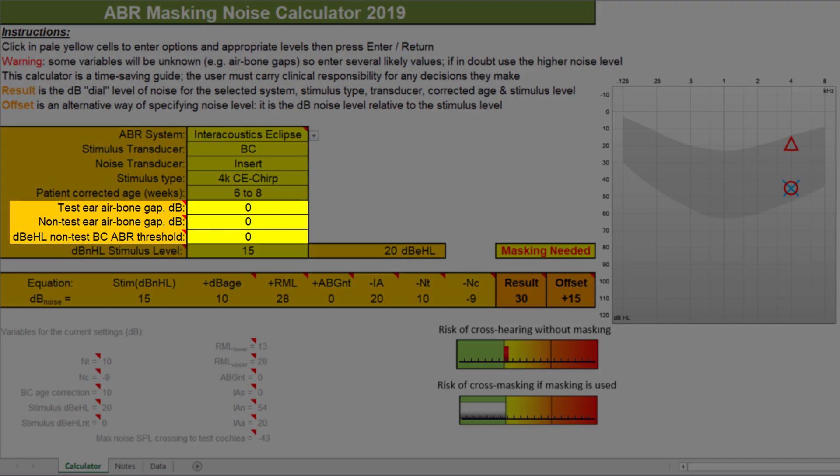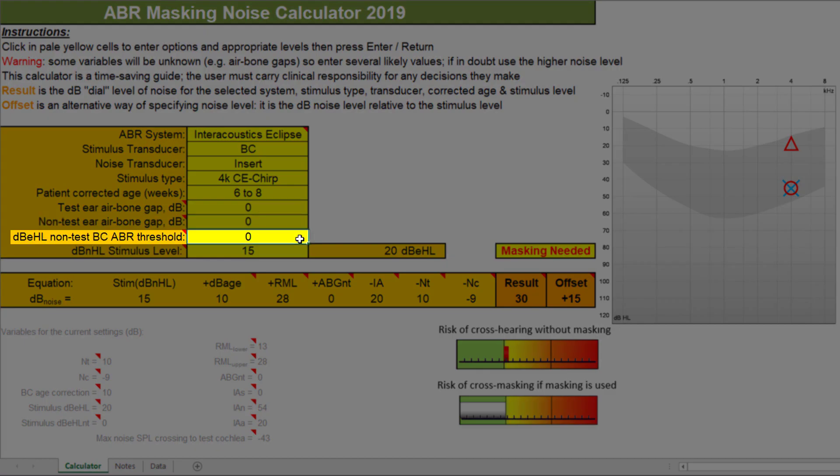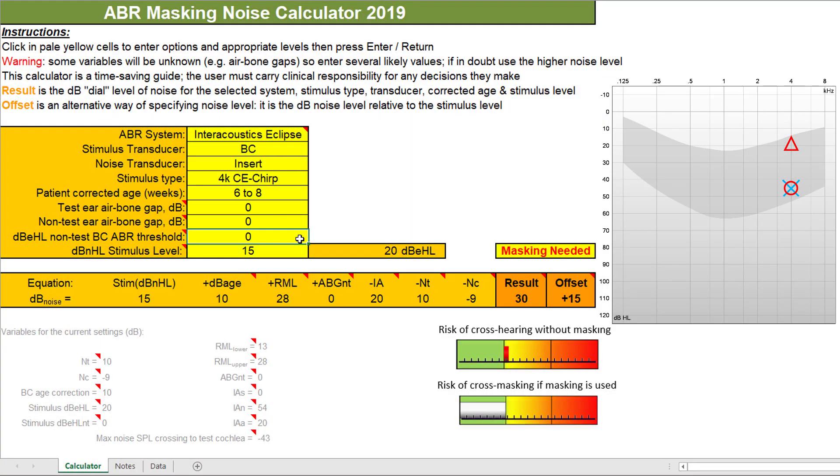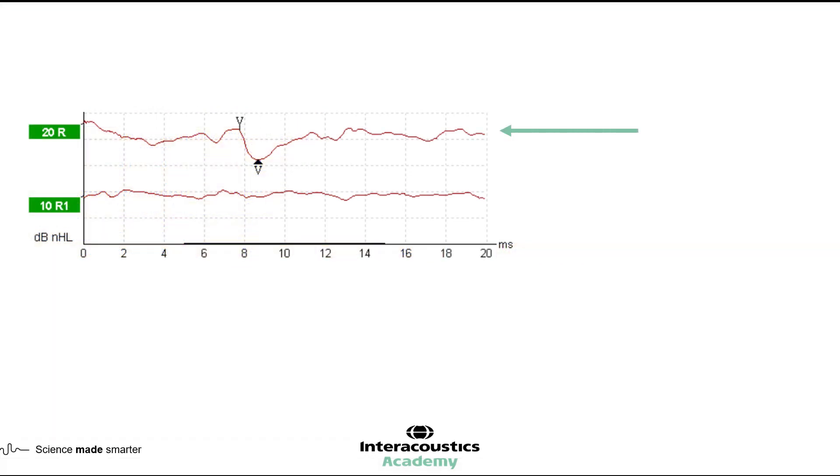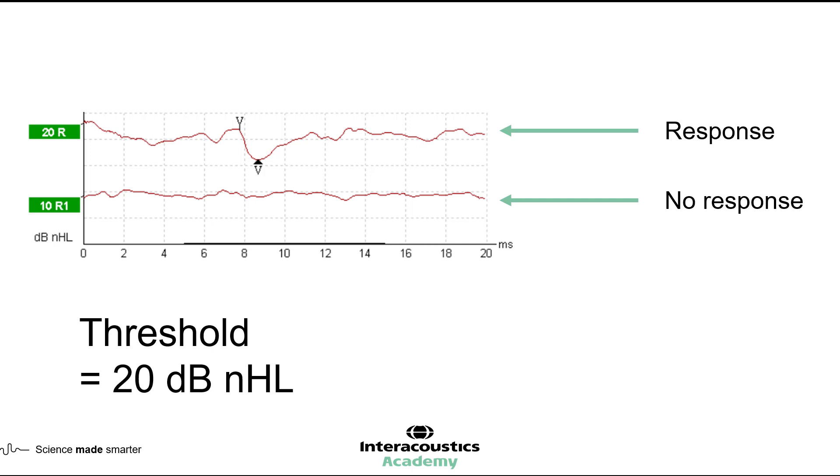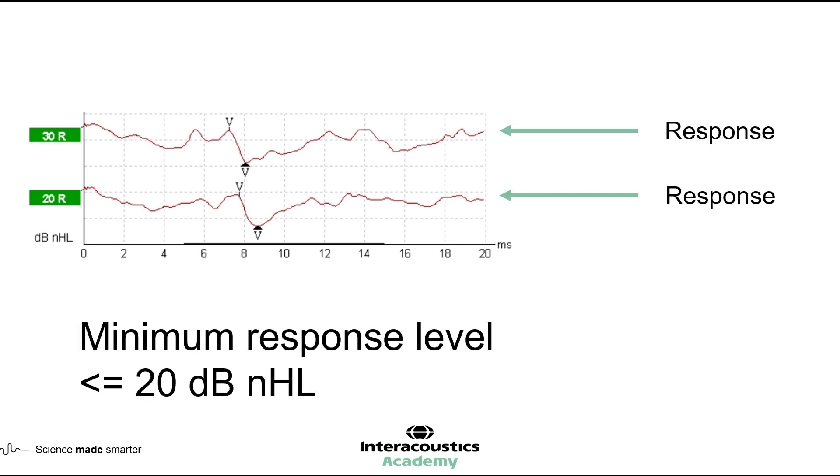Now, there are three remaining boxes to complete in the calculator. The test year air bone gap only applies for air conduction masking, so we can leave this as zero for this example. The non-test ear air bone gap and the non-test BC ABR threshold are both unknown values at this moment. You can make use of your not masked bone conduction response to guide you at this point, if you have recorded a threshold. This will be the lowest possible bone conduction value for either ear, so you can use this to estimate the value for these two boxes. If you have only recorded a minimum response level as opposed to a threshold, then you must be aware that the true bone conduction threshold may be much quieter, leading to greater amounts of masking being required.